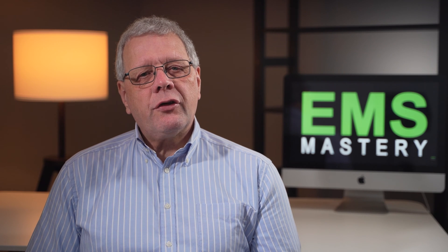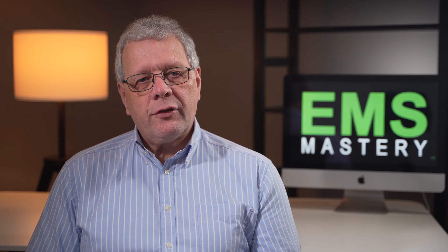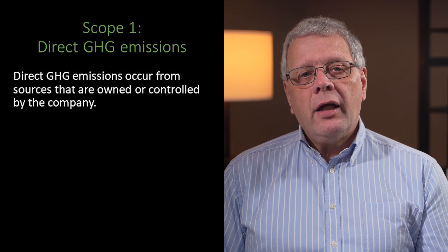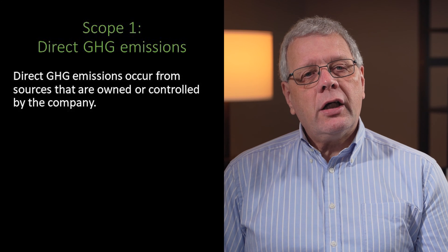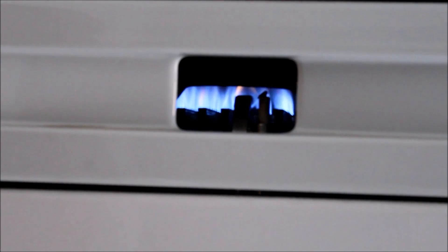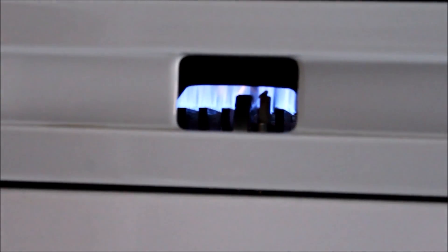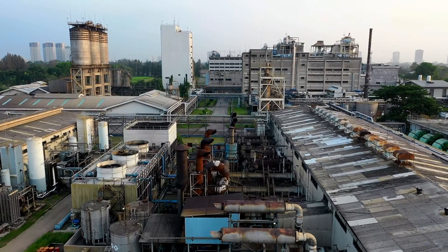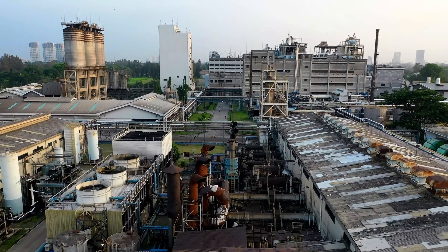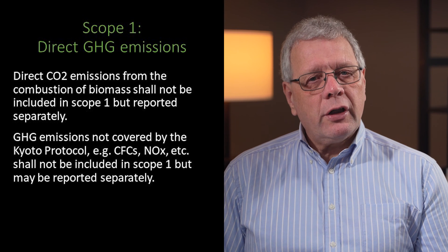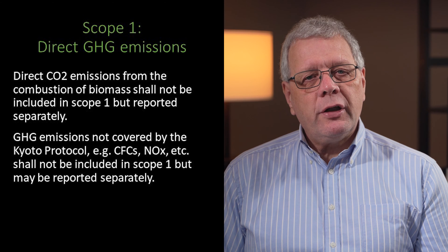Scope 1 is the direct GHG emissions. Direct GHG emissions occur from sources that are owned or controlled within the company. For example, emissions from combustion in owned or controlled boilers, furnaces and vehicles, and emissions from chemical production in owned or controlled process equipment. Direct CO2 emissions from the combustion of biomass are not included in scope 1, but can be reported separately.